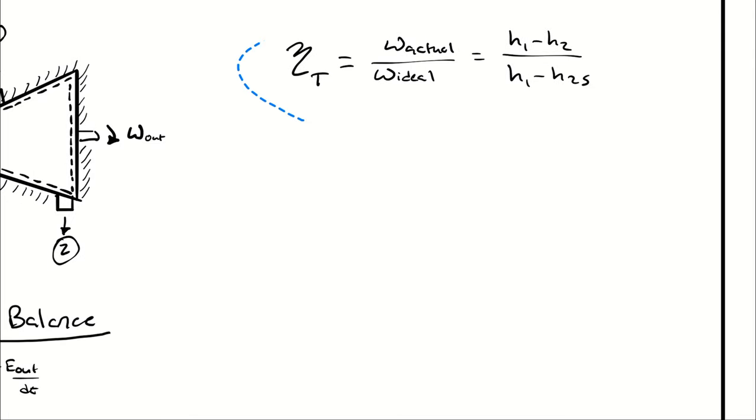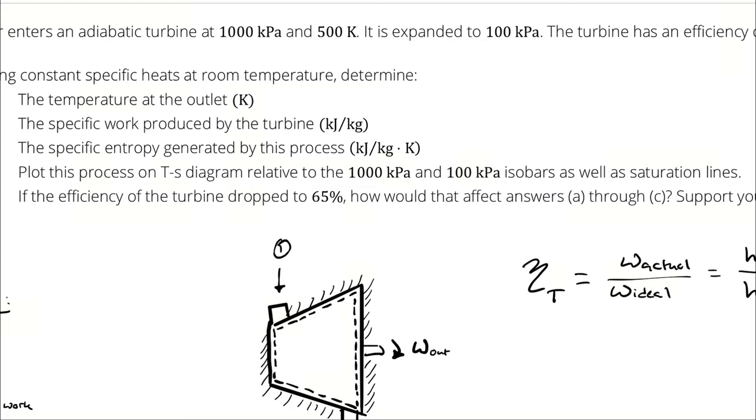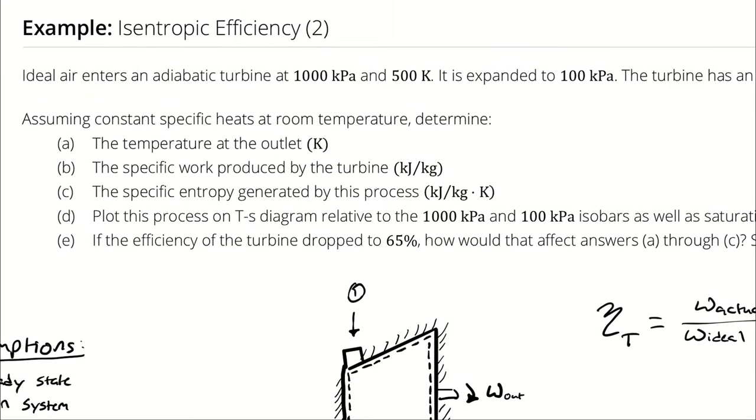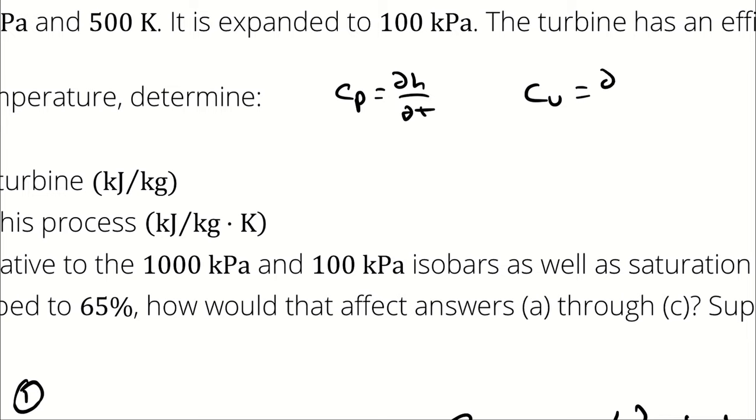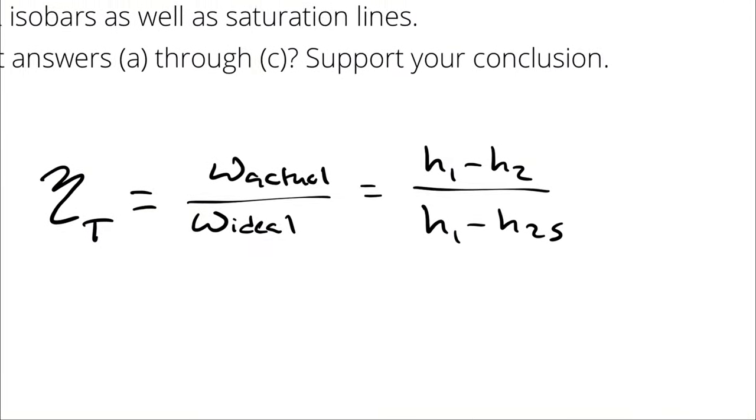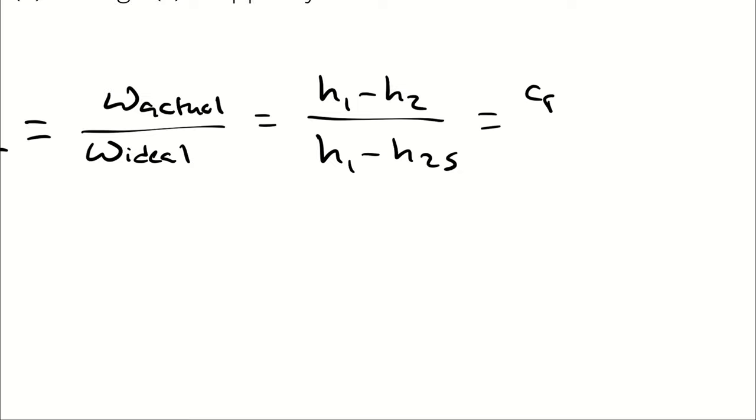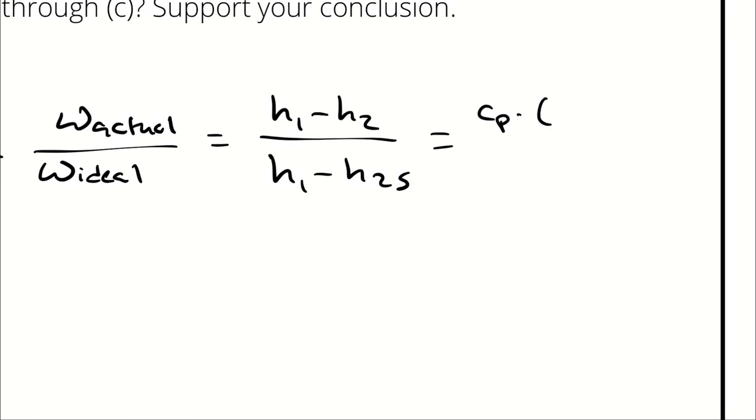Now, I can take this one step further by recognizing that the problem specifically told me to assume constant specific heats at room temperature. For ideal air, remember that Cp is defined as del H del T, and Cv is defined as del U del T. So because I have a delta H, I'm going to be using Cp delta T in place of delta H. It is not a constant pressure process. Cp has nothing to do with that anymore. If it's an H, I use Cp. If it's a U, I use Cv.